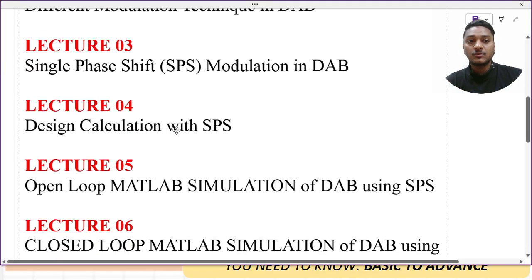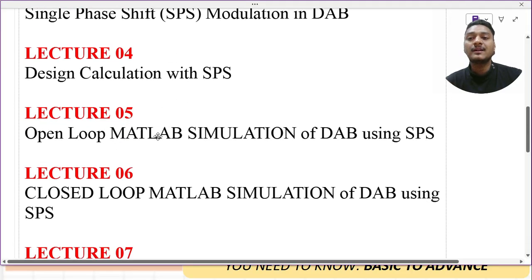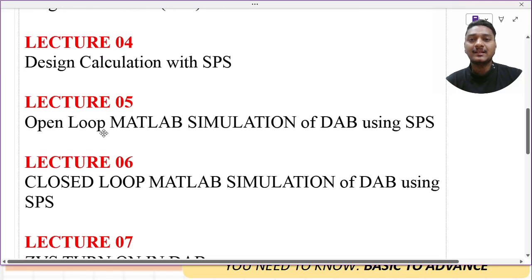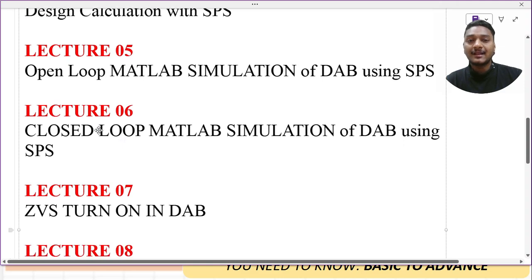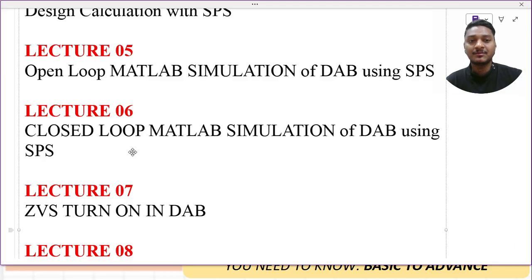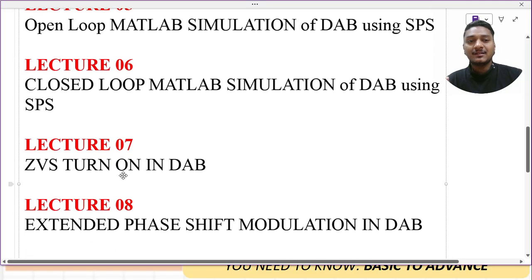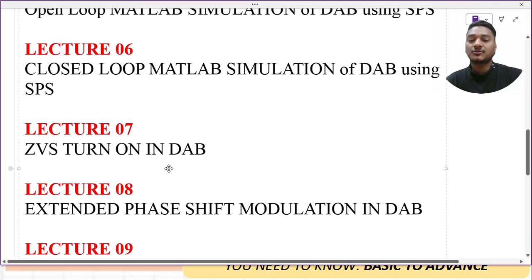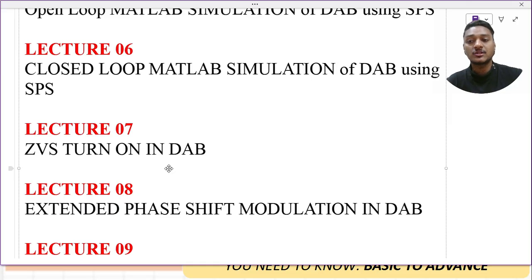In lecture number five we implement the single phase shift DAB converter in MATLAB using open loop — how to construct the circuit and how it operates. Lecture number six covers closed loop MATLAB simulation of the DAB converter using single phase shift, exploring one or two methods for closed loop control. Then in lecture number seven, a very important topic: zero voltage turn-on in the DAB — how ZVS is achieved and which operating region enables it.